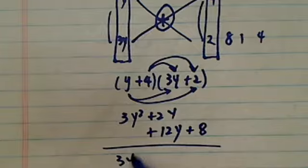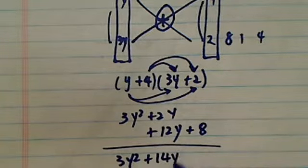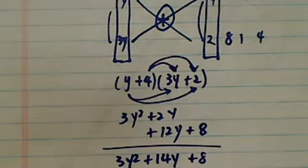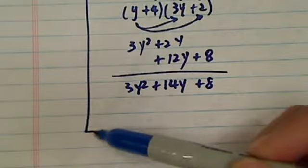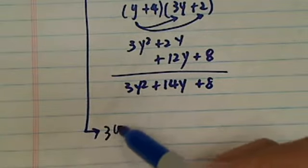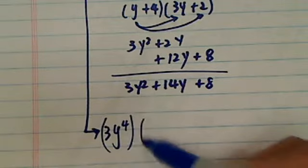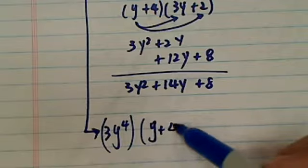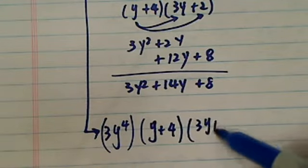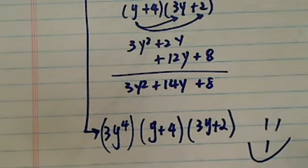That gives you 3y squared plus 14y plus 8, just like what we needed. So our original equation becomes—you remember we have 3y to the fourth—and then once we factor the stuff inside we have y plus 4 times 3y plus 2. All right? Have a confident day.